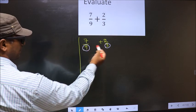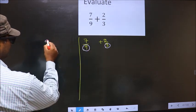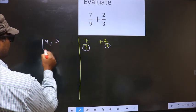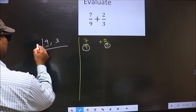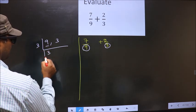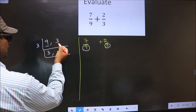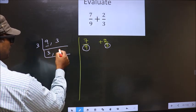So the LCM of 9 and 3. The first number is 9, 9 is nothing but 3 times 3. The other number is 3. When do we get 3 in the 3 table? 3 once 3.